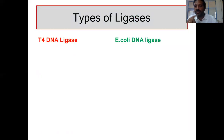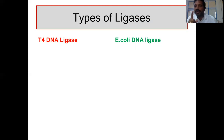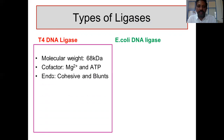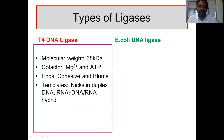There are two types of ligases: eukaryotic and prokaryotic. Eukaryotic ligases require NAD+ as a cofactor, with the exception that T4 DNA ligase requires ATP. The properties of T4 DNA ligase: molecular weight is 68 kDa, cofactors are magnesium and ATP. It can ligate both cohesive ends as well as blunt ends. The templates for T4 DNA ligase include nicked duplex DNA, RNA-DNA, and RNA hybrid.